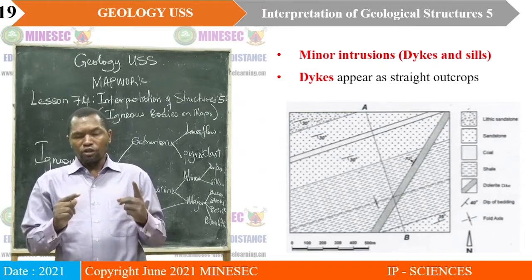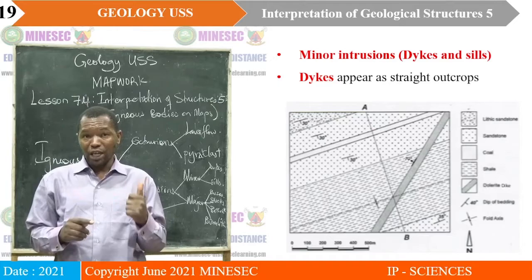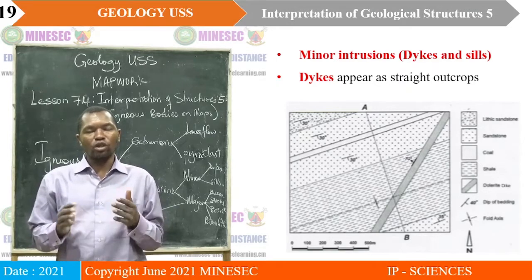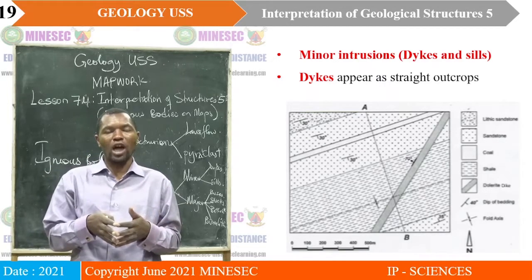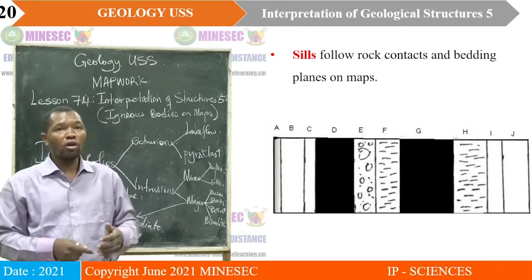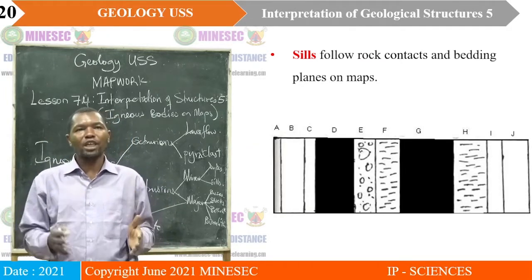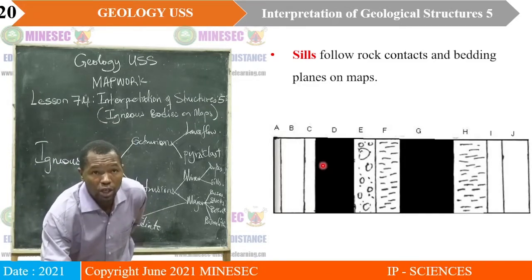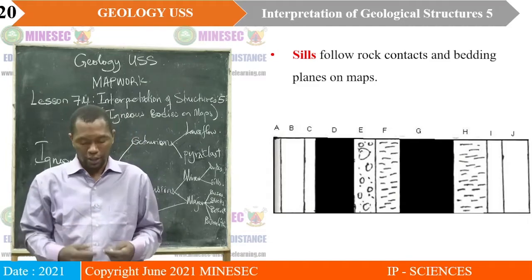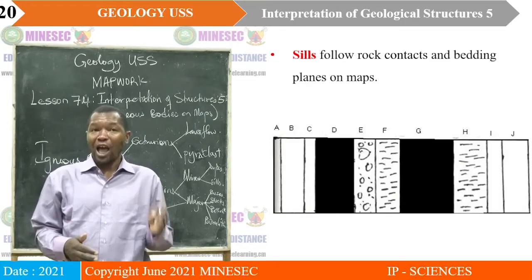Acid intermediate would include micro-granite, and we also have aplites. Sills follow rock contacts and bedding planes on maps. Looking at our map, this is a sill, concentrated on bed D and also on bed G — they lie concordantly to beds or bedding planes, and they also occur as hypabyssal rocks.